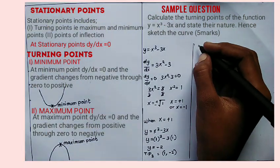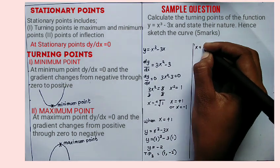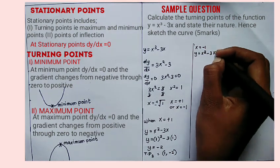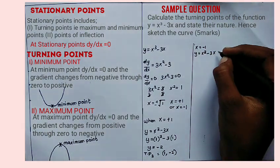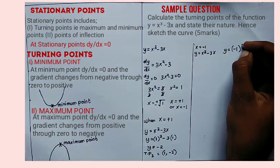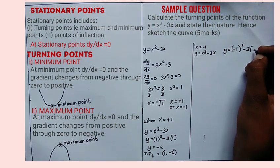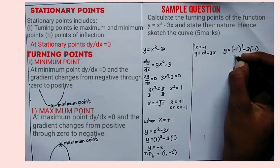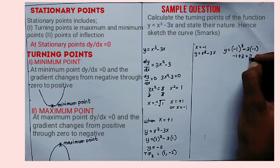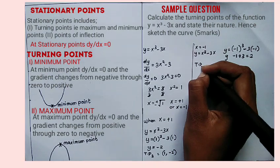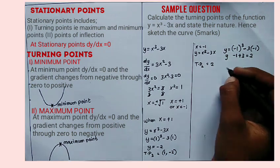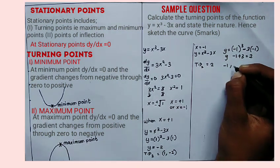The second turning point: use the second value of x, which is negative 1. The equation is y is equal to x cubed minus 3x. Substitute x equals negative 1: y is equal to negative 1 cubed minus 3 times negative 1. Negative 1 cubed is negative 1, then negative 3 times negative 1 is positive 3, which gives y equals 2. So the second turning point is (negative 1, 2).